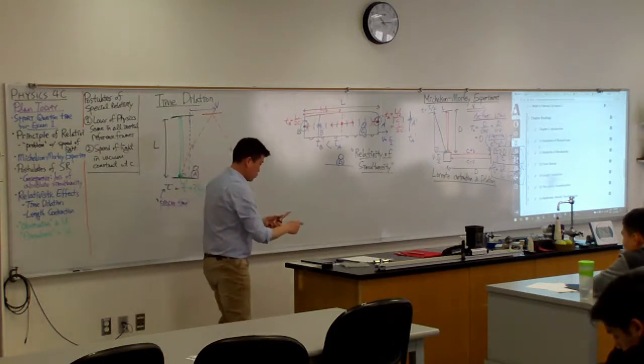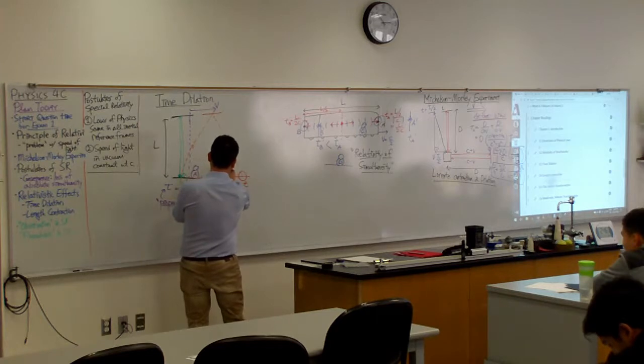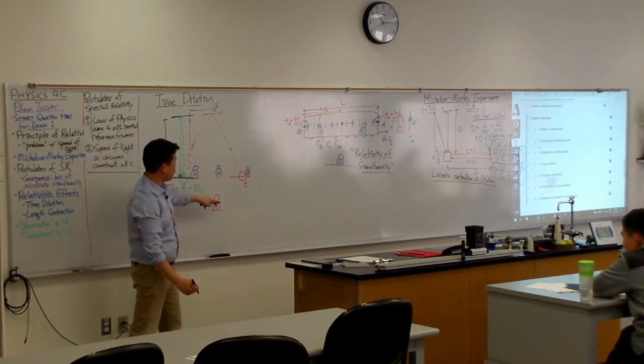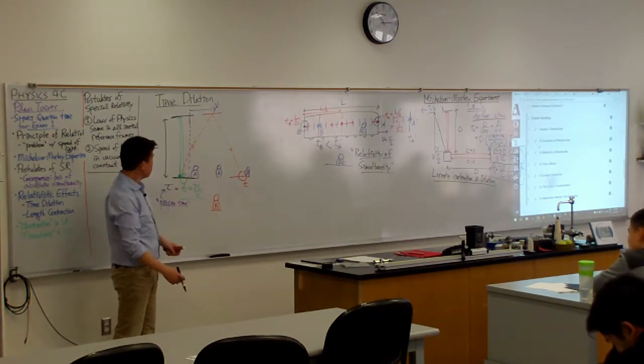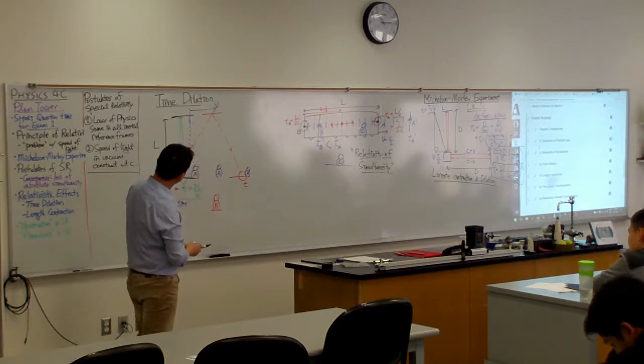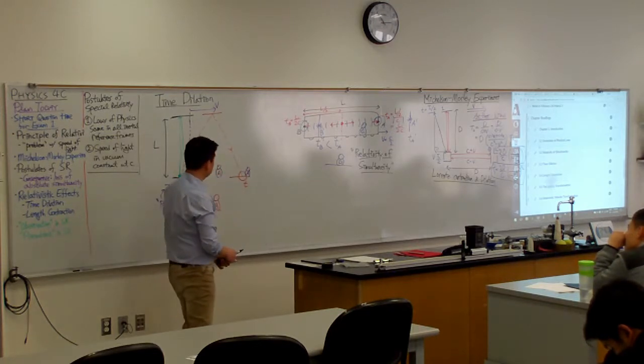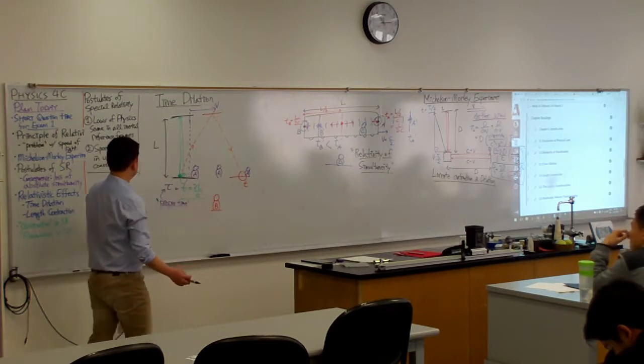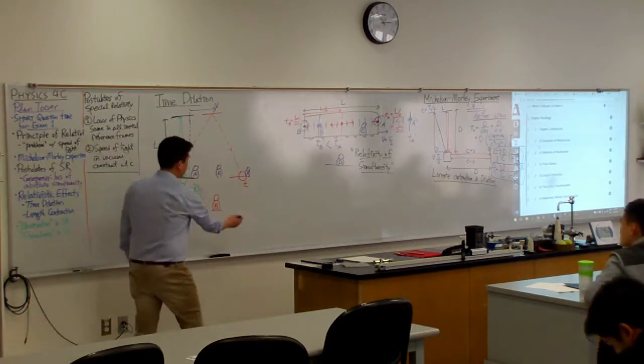Now, for Observer A, who stayed with the clock, so if I'm drawing everything, Observer A was here when the light hit there, and Observer A is here when the light comes back, this same amount of time would have passed for Observer A. For Observer B, how much time passed? Well, I think I have all the diagram. I think I can figure out how much distance all this is, and how fast is light moving for Observer B? C. Yeah, C. Because that's the second postulate of special relativity.